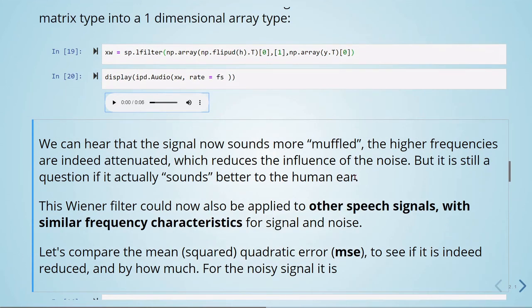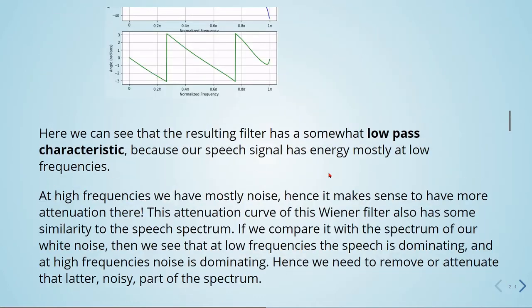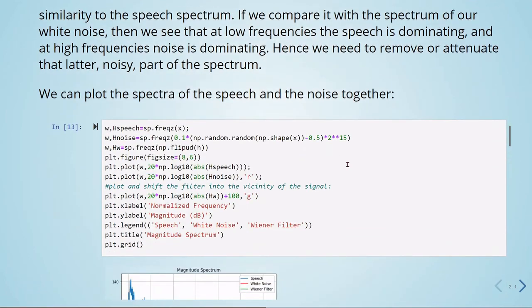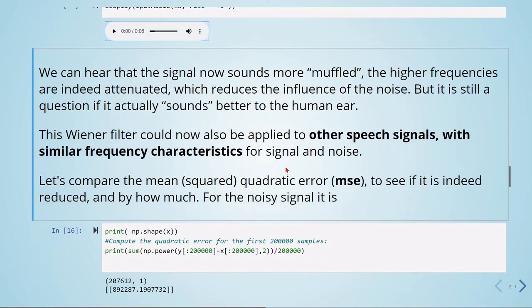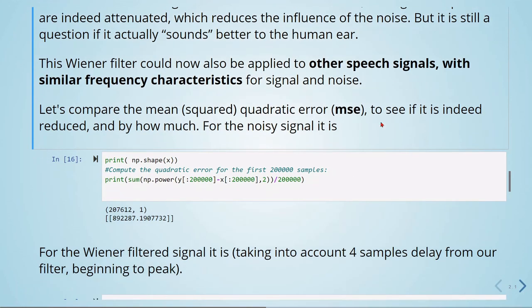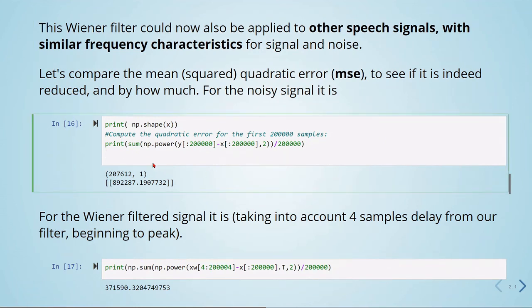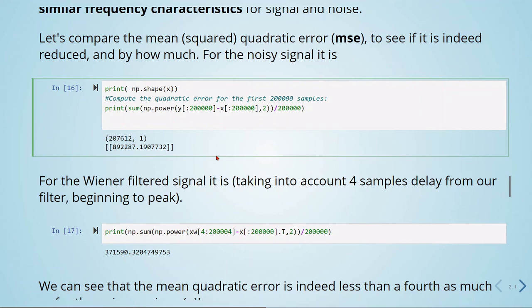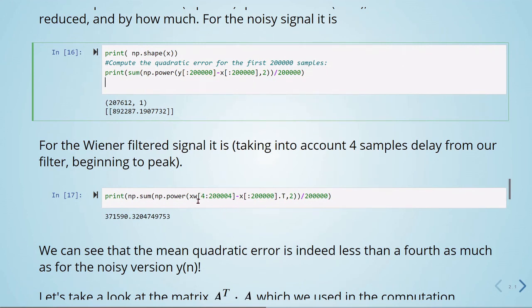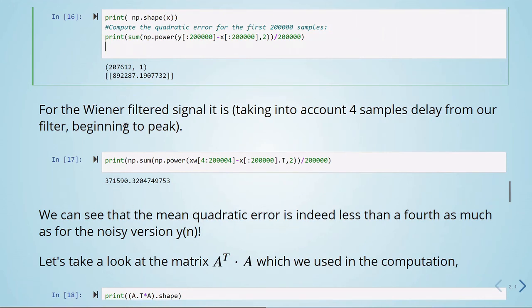Now let's compare the mean square quadratic error, the MSE. This was the optimization. What we wanted to do here is to see if it's reduced using this filter. This is for the noisy signal. We are computing the mean square quadratic error. For the Wiener filtered signal, we need to take into account the 4 samples delay from our filter. We have this shift here to compensate the delay, and we see that there is indeed much less, maybe almost two times less than the noisy version.